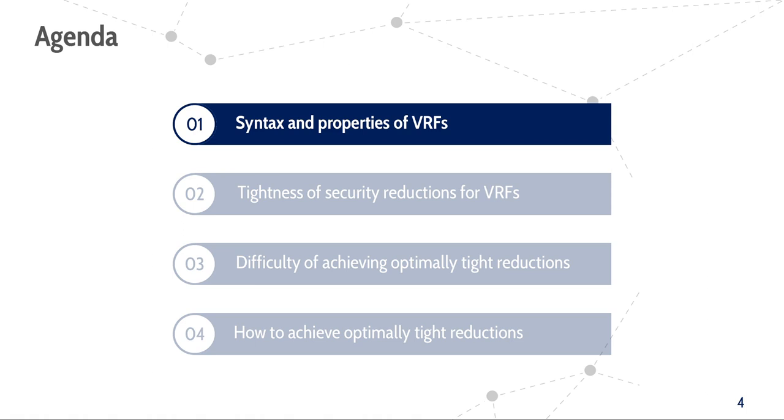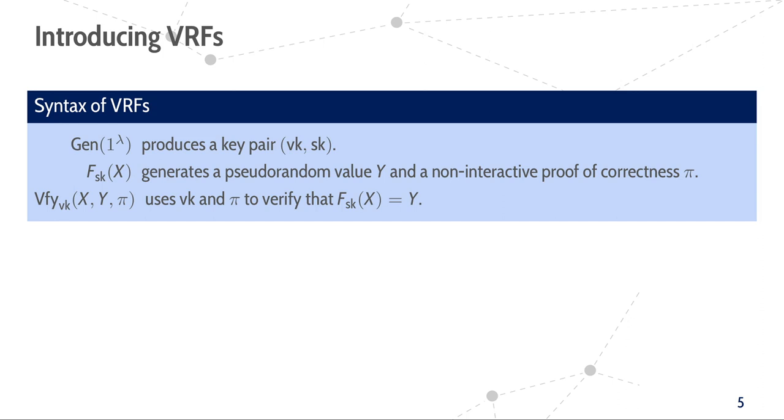So let us start with recalling the syntax and properties of VRFs. Technically, a VRF consists of three algorithms. First, a generation algorithm that produces a pair of secret key and public verification key. Then an evaluation algorithm that produces a VRF output Y for an input X. Just like for a PRF, the algorithm requires the secret key SK and the output Y is supposed to be pseudorandom. However, the evaluation algorithm also produces a non-interactive proof of correctness Pi. This proof can then be used with the verification algorithm to verify the correctness of Y with respect to the input X and the public verification key.